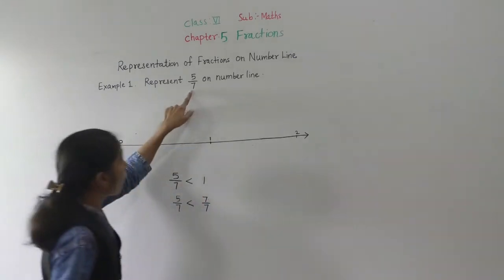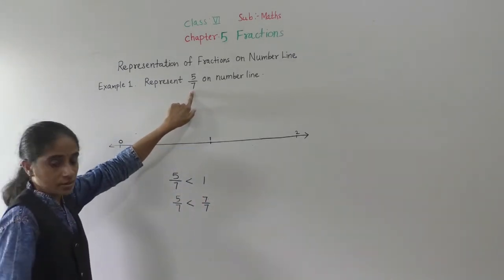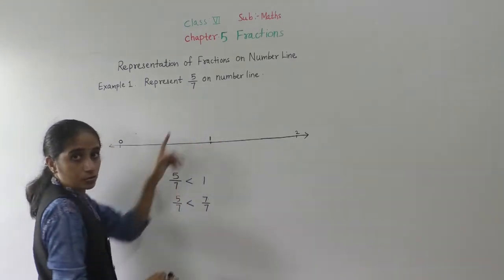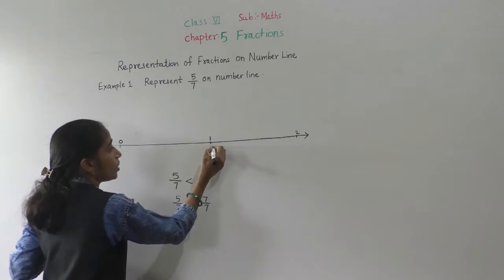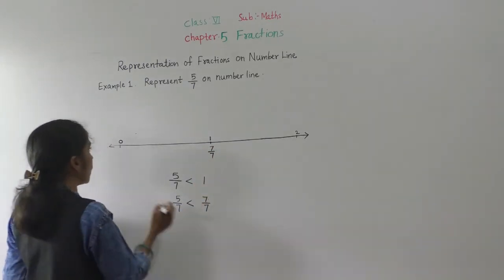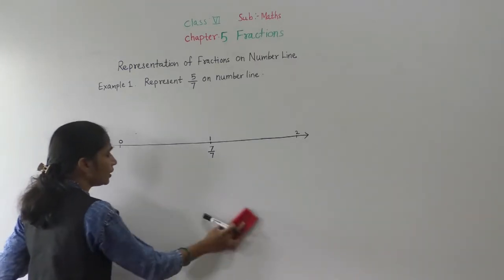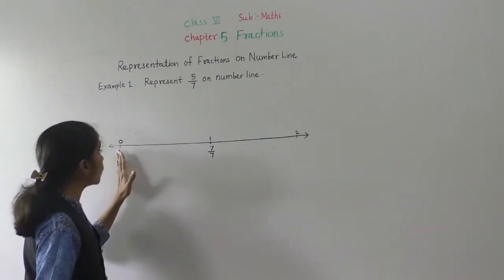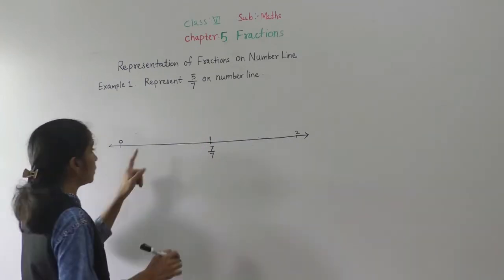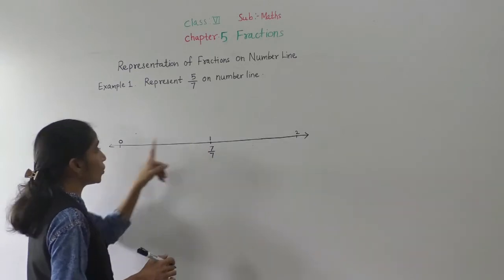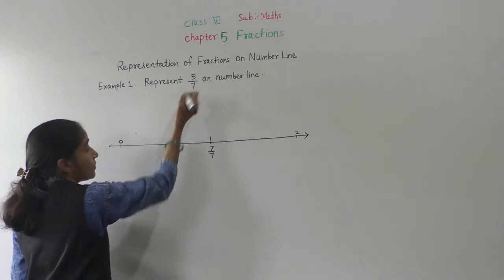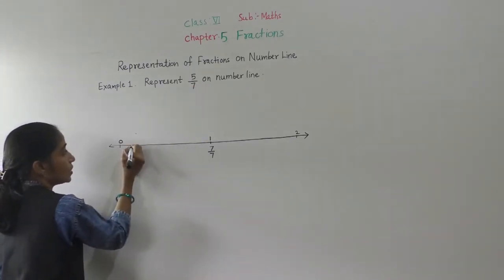So what we have to do: how many total parts are there? 7. Total parts are 7, so 7 upon 7 means 1. From 0 to 1, we will equally divide into 7 parts. Divide 0 to 1 equally into 7 parts.